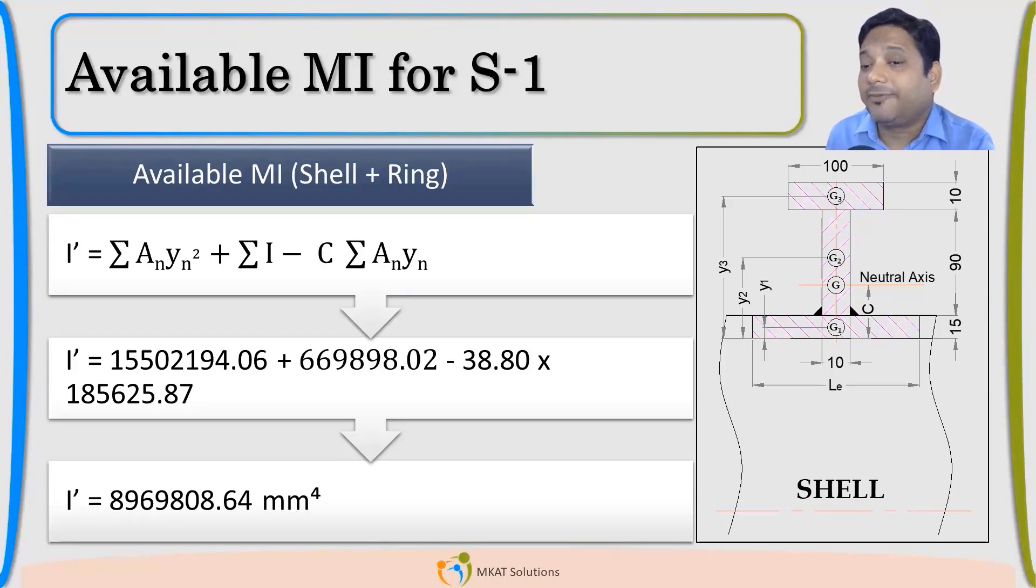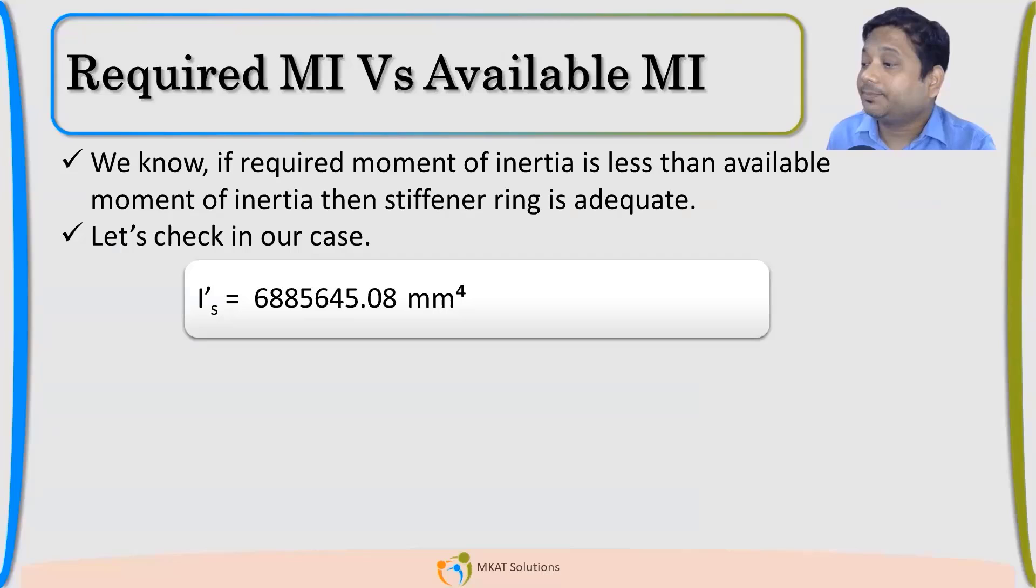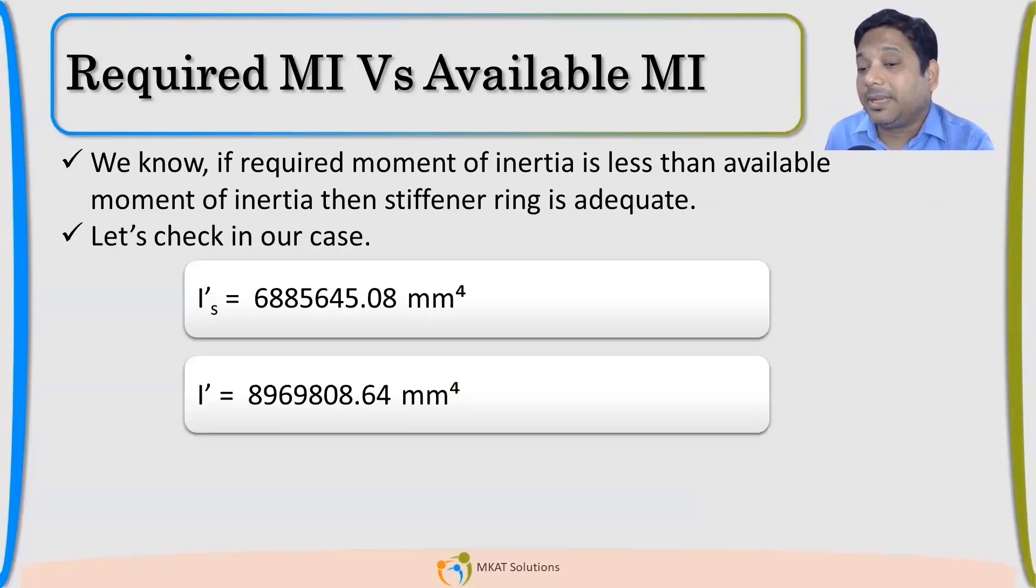Now, let us compare. I have now available. I wanted it available to be more than what is required. So, now let us compare IS dash which is the required moment of inertia. And IDAS will be the available.